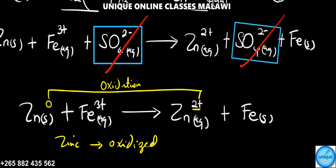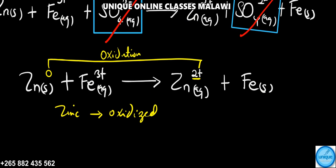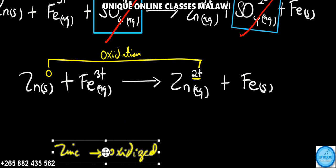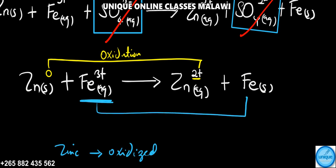Now looking at iron, iron goes from +3 to zero. The oxidation number goes from +3 to zero. It has been reduced.